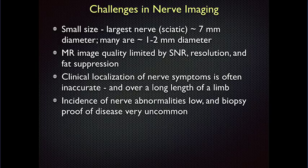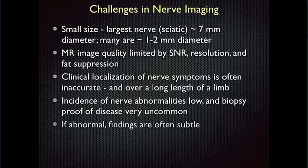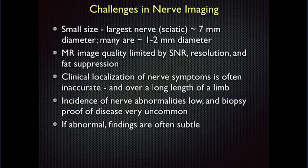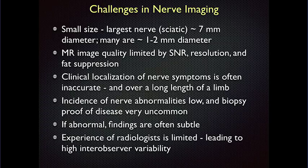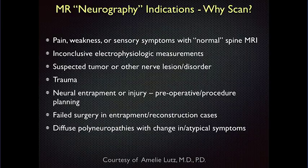In general, the incidence of nerve abnormalities is low, and even if something is abnormal, it's uncommon to get biopsy results, so there's not a lot of good feedback. And if they are abnormal, the findings are often subtle. In our division of five or six MSK radiologists where we mainly do this interpretation, there's a lot of inter-observer variability — some are very sensitive, some less sensitive for calling a nerve abnormal. That inter-observer variability and our limited experience overall affects things as well.